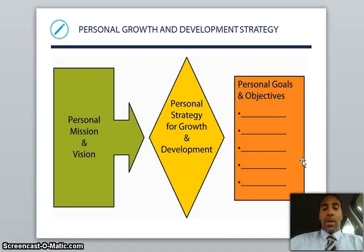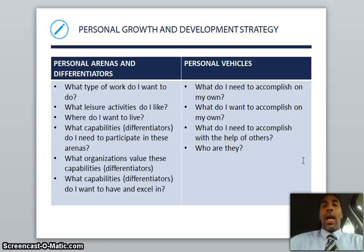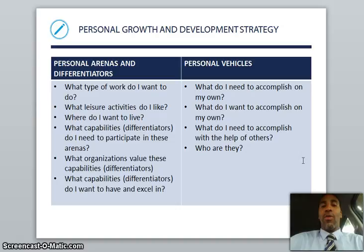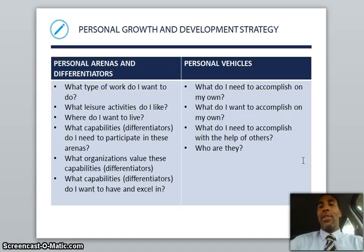Personal growth and development strategy — this is a great slide. You want to find out what type of work you want to do. A lot of times when you're a kid you say this is what I want to do, and then those dreams go by the wayside and you end up in a cubicle wondering how you got there. What leisure activities do I like, and are there jobs associated with those? Where do I want to live — sunny Southern California or Alaska? What capabilities do I need to participate in these arenas? How can I set myself apart? What organizations value those capabilities, and what capabilities do I want to have and excel in? What am I looking for in terms of training, learning, and development?